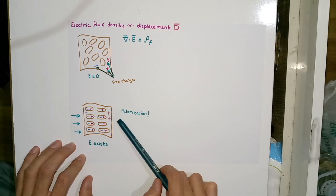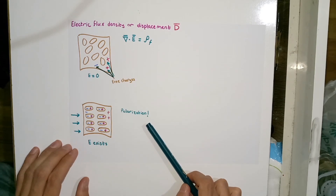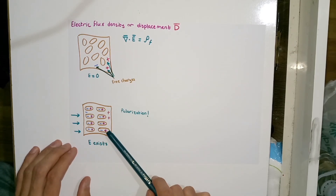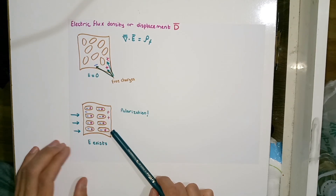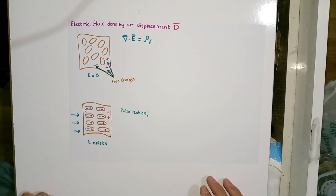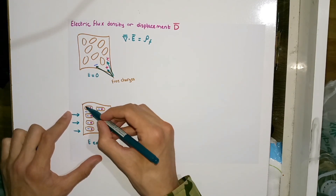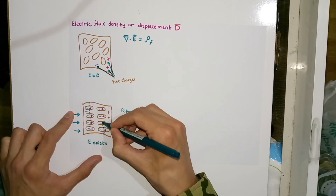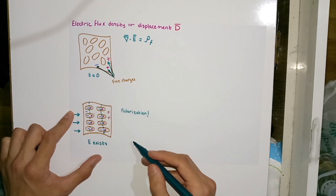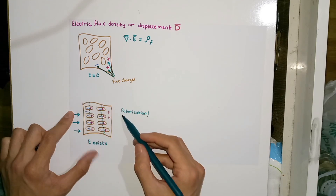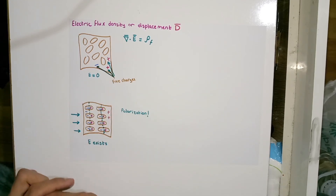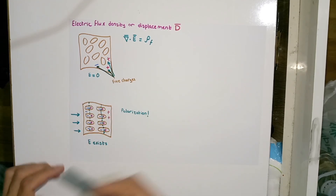This phenomenon is known as polarization. Under this case, we have a new couple of charge densities: a surface charge density on the surface of the dielectric, and a volume charge density within the bulk of the dielectric.